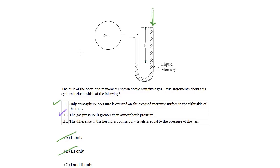How about statement III? The difference in height of mercury levels is equal to the pressure of the gas. Well, that's not actually true. It's related to the pressure of the gas, but it's not equal to it, because this H tells you what the pressure of the gas is plus the atmospheric pressure.